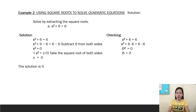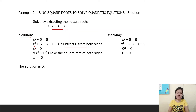Another example: solve the quadratic by extracting the square roots. We have x squared plus 6 equals 6. Subtract 6 from both sides: x squared plus 6 minus 6 equals 6 minus 6, so x squared is equal to 0. To cancel out squared, we take the square root of both sides. The answer is x is equal to 0, because the square root of 0 is 0. The solution is 0.